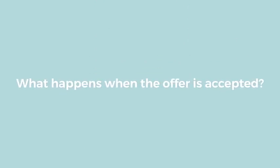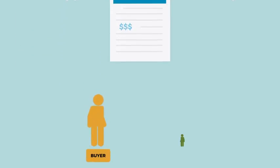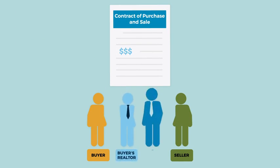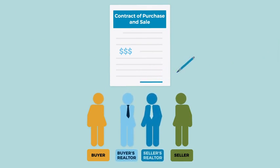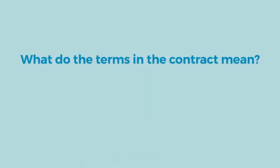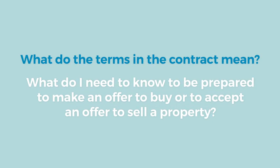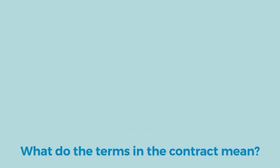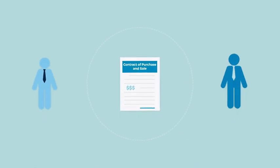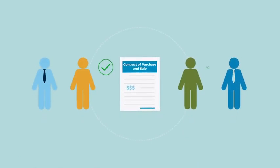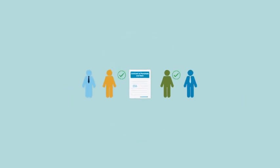What happens when the offer is accepted? If the parties reach an agreement, a binding contract is formed and the parties must carry out their respective obligations contained in the Contract of Purchase and Sale. It is important that all parties are aware of its terms and conditions so that they know what their obligations are and can carry them out.